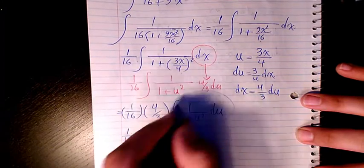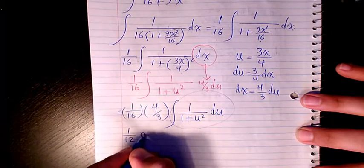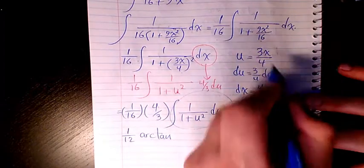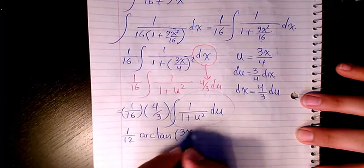And integration of this part is going to be arctan u, and u is 3x over 4 plus c. So that's the final answer to this question.